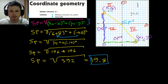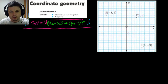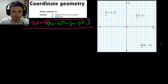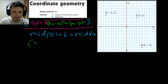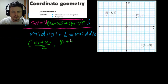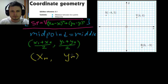Now let's talk about midpoints. The midpoint is simply the middle of two points. The midpoint formula is also given on the formula sheet and is very simple: the x-value of the midpoint is (x1 plus x2) divided by 2, and the y-value of the midpoint is (y1 plus y2) divided by 2.